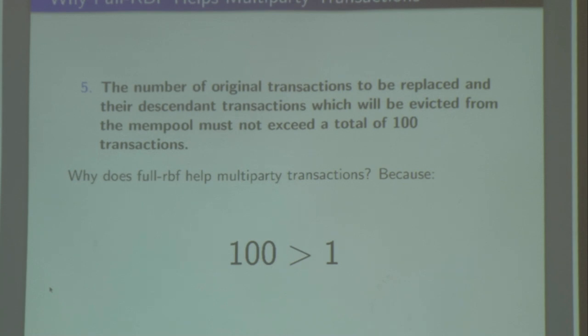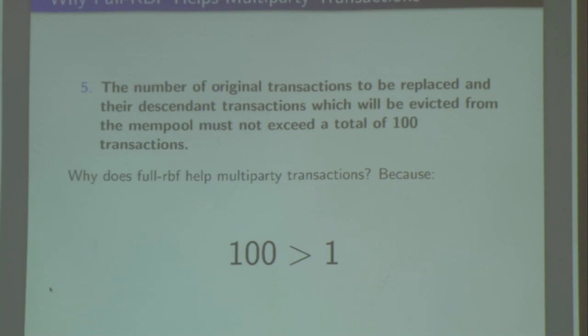Now let's look at the scenario where someone is maliciously trying to stop the CoinJoin. If they don't want to spend money, they have to broadcast a pinning transaction that pays low fees. Without full RBF, they can just broadcast any transaction at the minimum possible fee and it's not clear when that will get mined — maybe never. With full RBF, provided they paid less in fees, it will get replaced with the exception of pinning attacks.